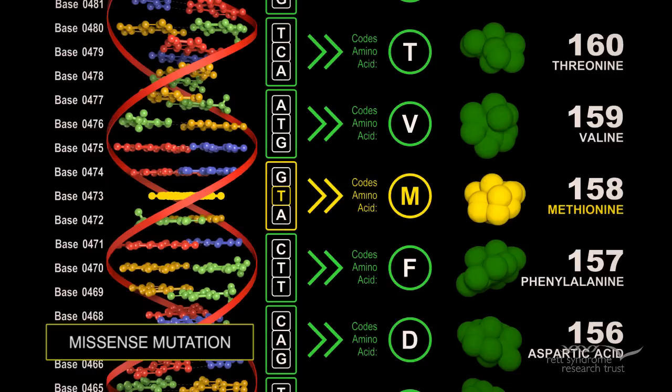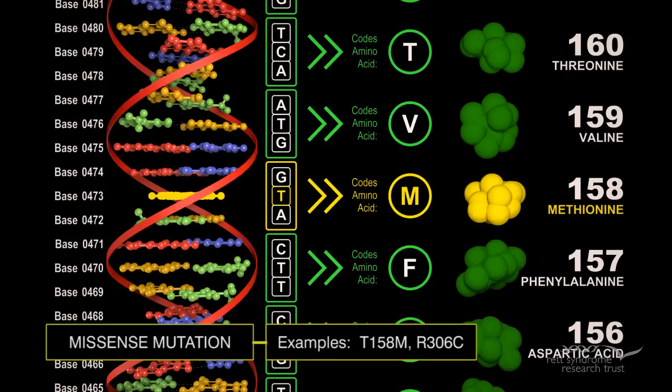At amino acid number 158, there should have been a threonine, but now there is a methionine. The name for this mutation is known as T158M. This simple change of only one amino acid out of almost 500 amino acids makes the protein dysfunctional.